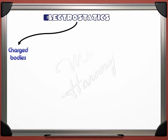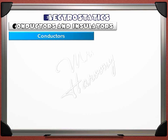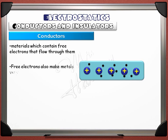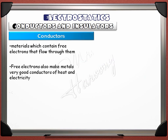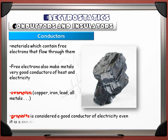The second part in this lecture talks about conductors and insulators — specifically electric conductors and electric insulators. Materials are classified into conductors and insulators according to their acceptance to the flow of electrons. Conductors are materials which contain free electrons that flow through them. In a conducting material, electrons can move freely within its solid structure. Free electrons also make metals very good conductors of heat and electricity. Examples: copper, iron, lead, all metals. Graphite is considered a good conductor of electricity, even though it is a non-metal, because it has free moving electrons.